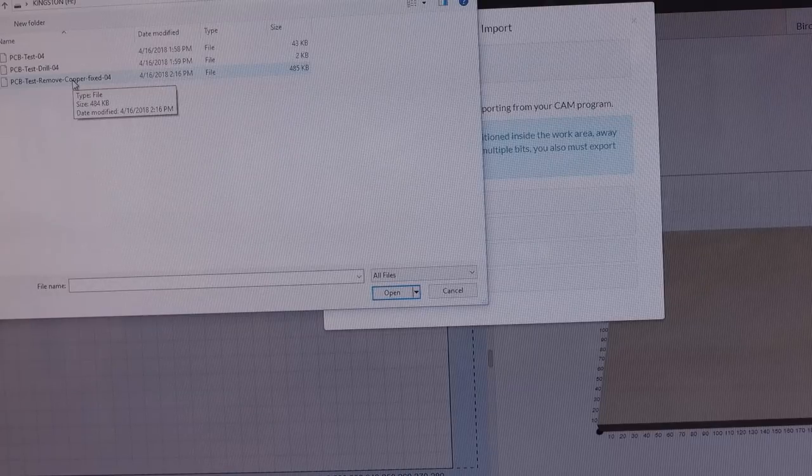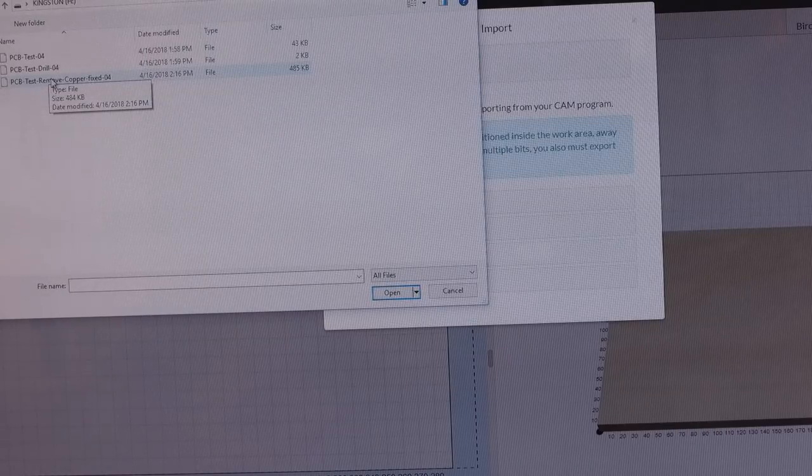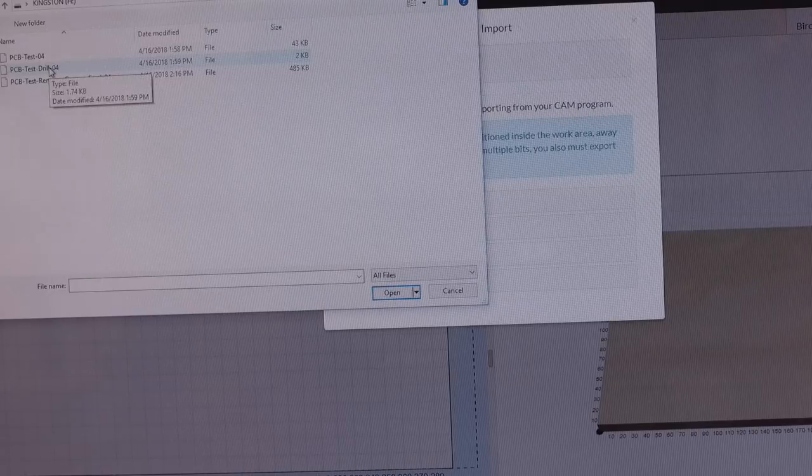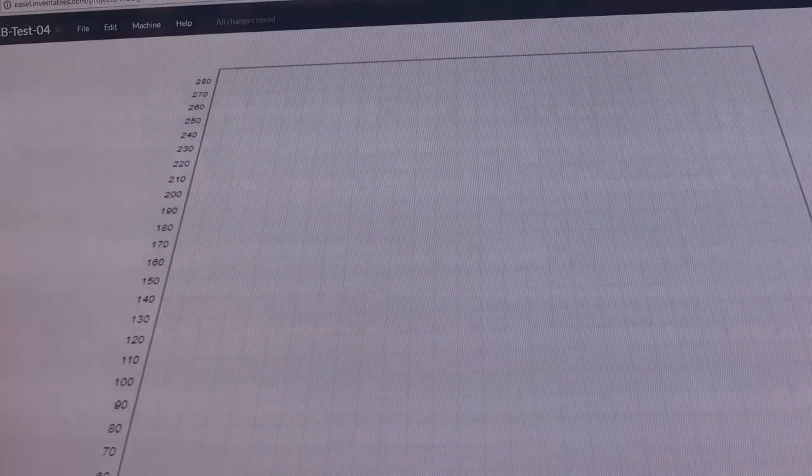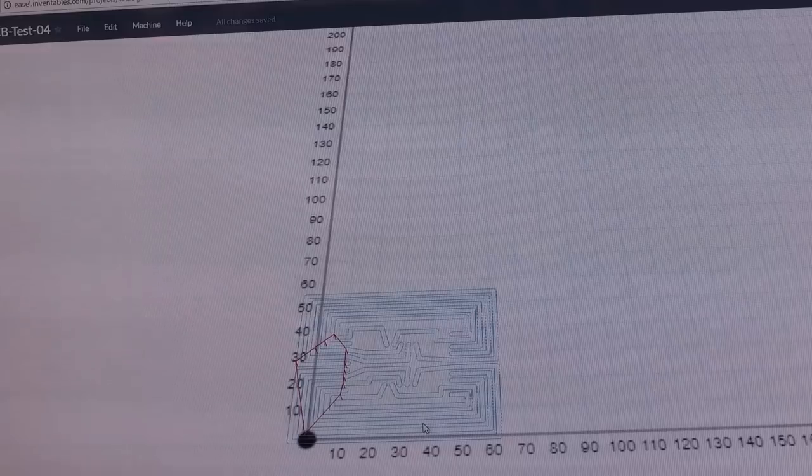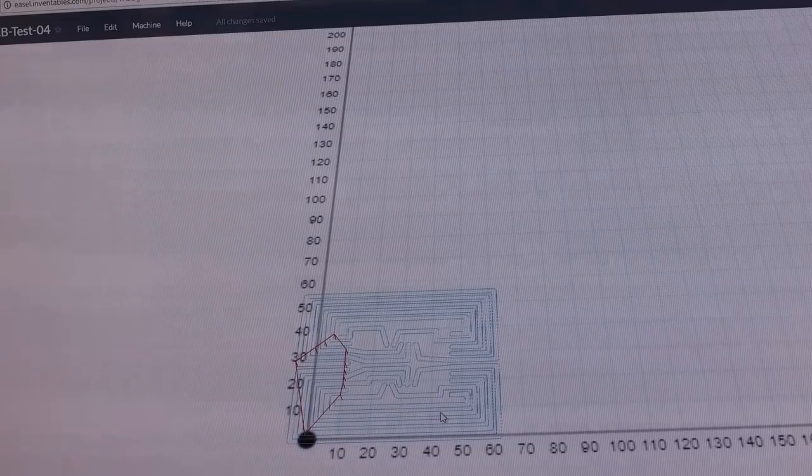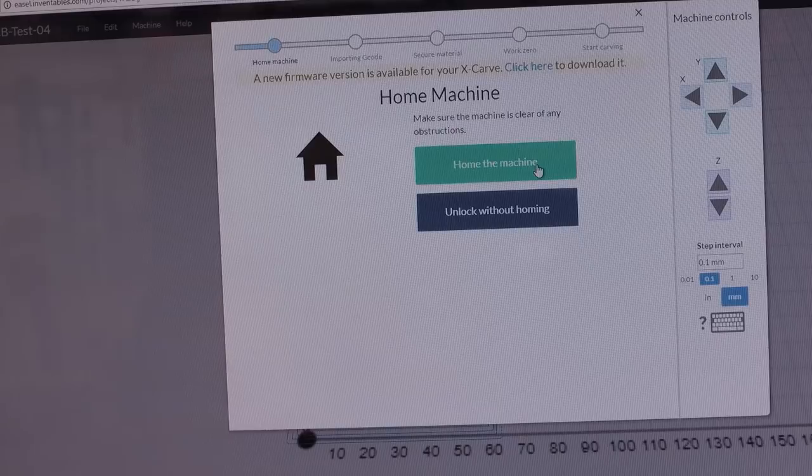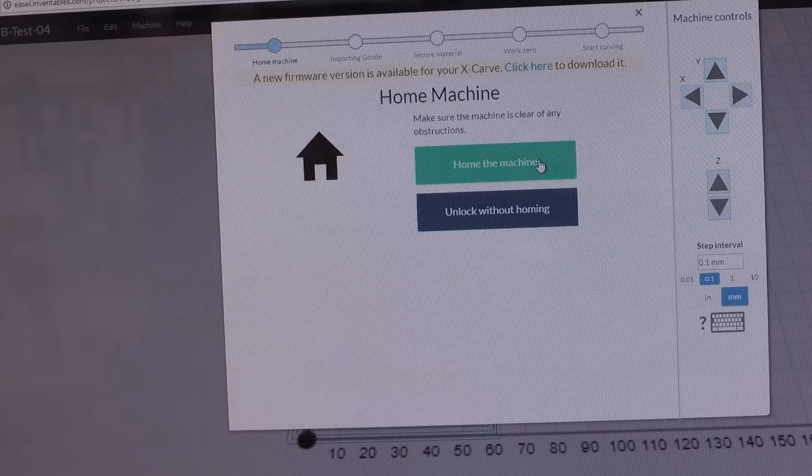I'm gonna choose the file that I created. So I have three files: I have the PC board which is the actual traces, I have the drill which is the holes that are gonna go through to fit the components, and then I have this other one which has removed copper. The way I'm gonna do this, I'm gonna do the traces first, then I'm gonna run this one to remove the excess copper so that way I don't have copper lying around the board that could be hard to solder when I get to it. Now I'm ready to start carving so I'm gonna click on carve, I'm gonna home the machine first, and then I'm gonna set the X, Y, and Z home.